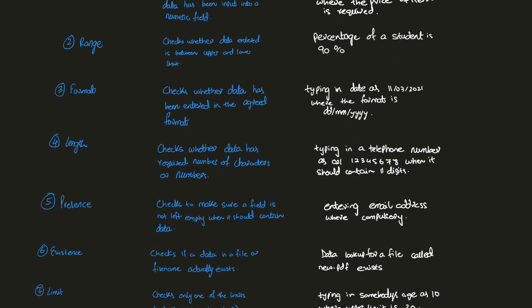Now we have length check. It checks whether the data has the required number of characters or digits. For example, some username fields have an upper limit — they cannot be longer than 20 or 24 characters. Another example: a telephone number must contain 11 digits, such as 02111234567. If the number had only 8 or 12 digits, the length check would give an error because the right number of digits was not entered.